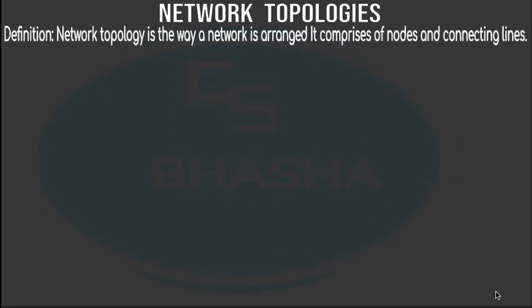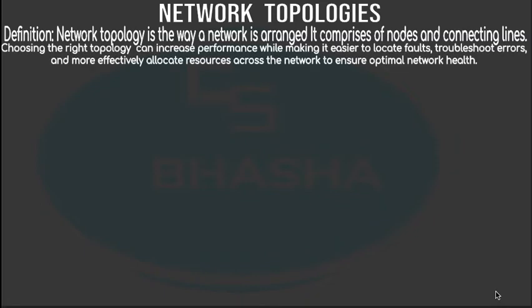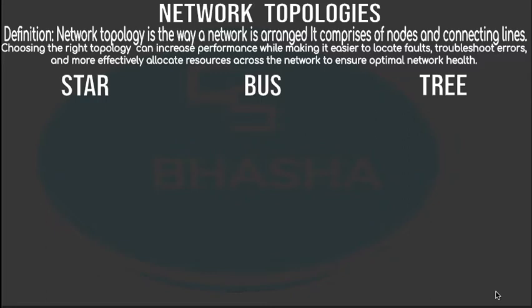Now let's talk about topologies. A topology refers to certain rules we follow when trying to send information over the network from one place to another. It is the way our network is arranged, and it comprises nodes and connecting lines — where nodes mean your computers or different terminals. It is very important to choose the right topology so that errors are minimized when transferring data. When talking about the physical arrangement of the network, we talk about network topology.